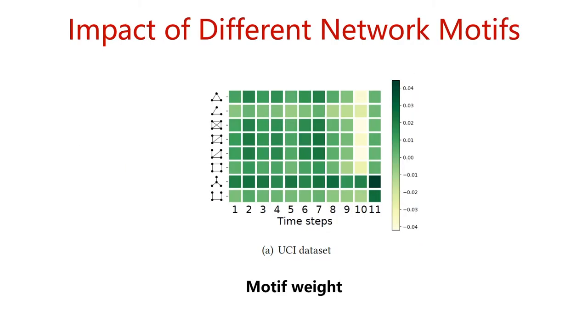To understand the impact of motifs in generating node embedding in dynamic network, we visualize motif weights learned at each time step on UCI in above figure. We can see that the importance of motifs at different time steps in the same dataset is various. In communication network UCI, users are more likely to interact with close friends in the same communities, and the dense local structures help us improve prediction for the future links.